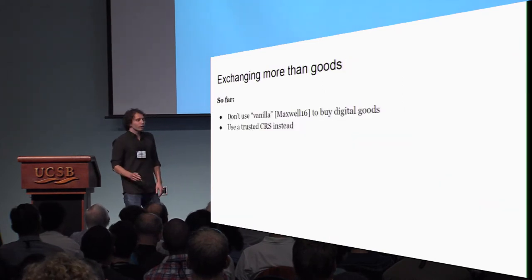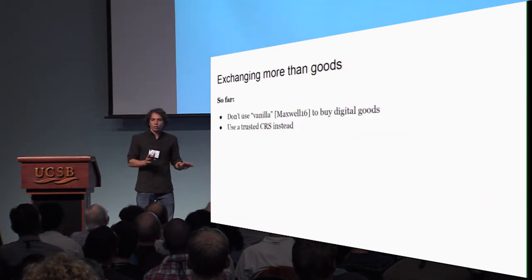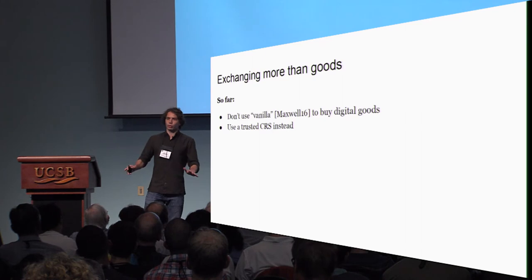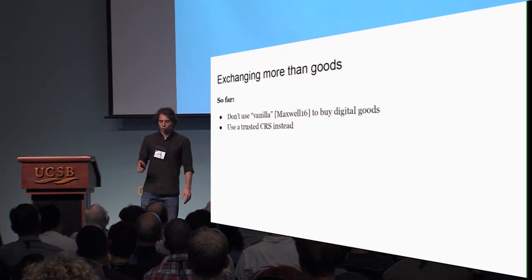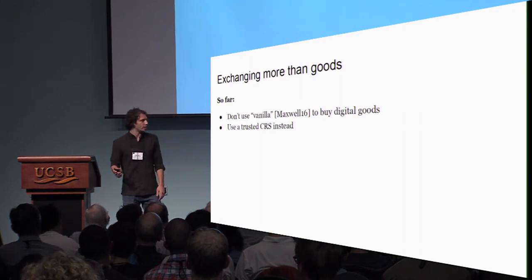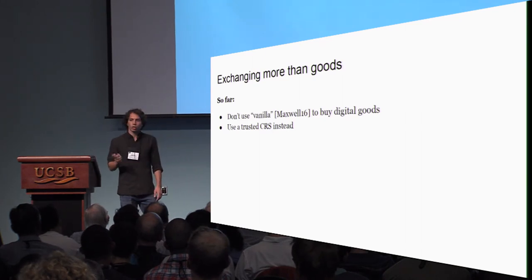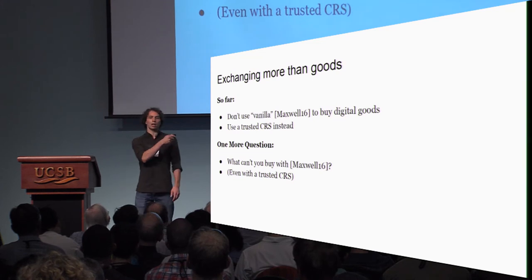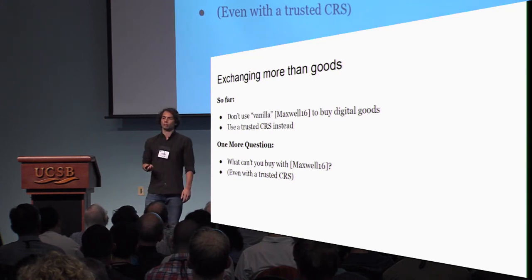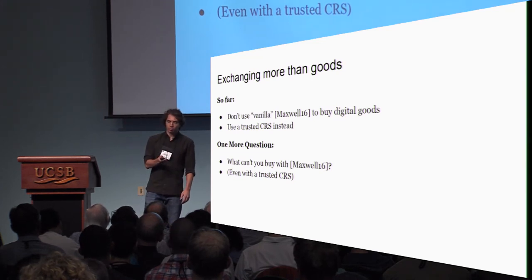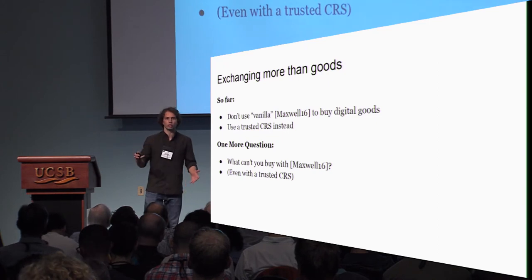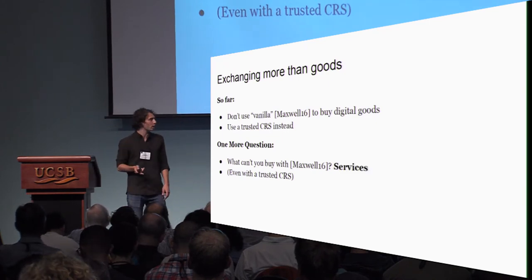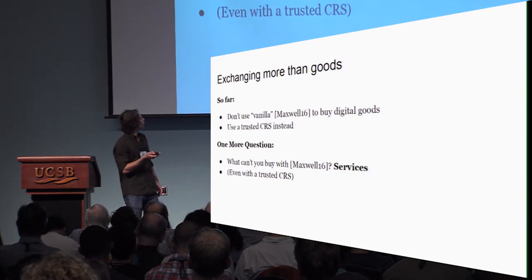So the moral of the story: look at the CRS, get it from a trusted party — don't just use it as-is. Another question I want to raise is: what can't you buy with this protocol? Digital goods, yes, but there are things I'm going to call services that you cannot buy.